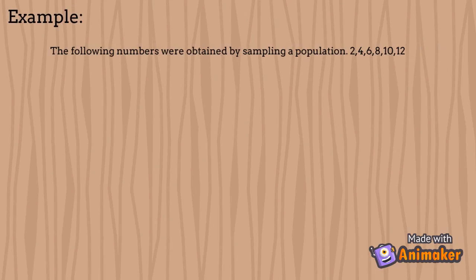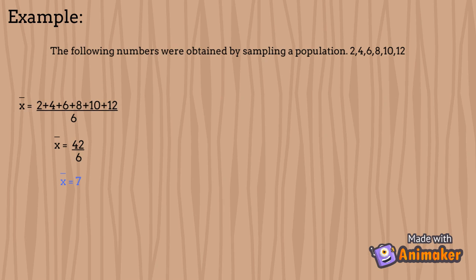Let's proceed to finding the variance and standard deviation. Example: the following numbers are obtained by sampling a population — 2, 4, 6, 8, 10, and 12. First, we determine the mean. To determine the mean, we add the given data set and divide by the number of values. So, 2 plus 4 plus 6 plus 8 plus 10 plus 12 divided by 6. The answer is 42 divided by 6, which equals 7. So our mean is 7. Since this is a sample, the formula we're going to use is the variance of the sample.